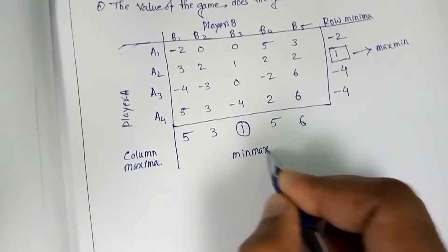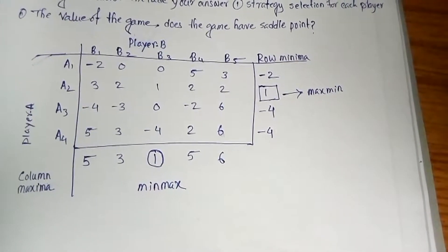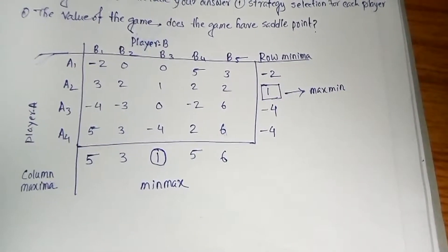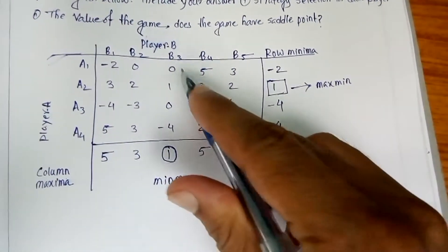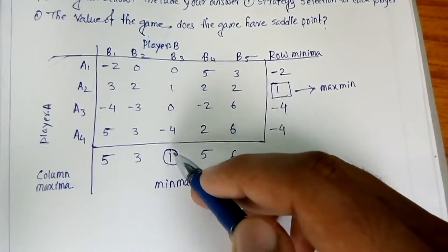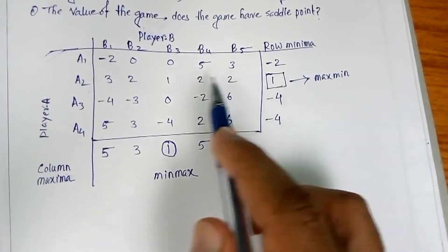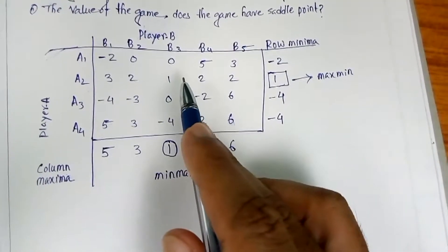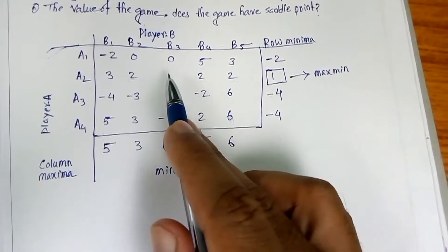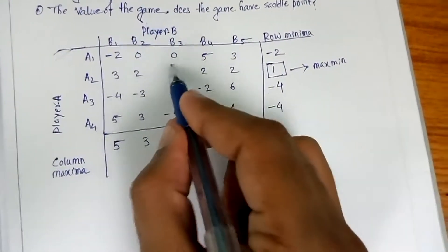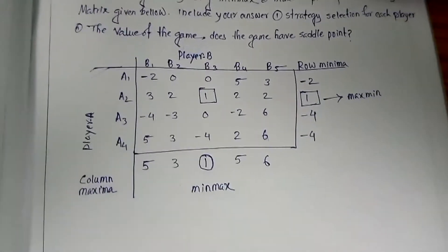Now find the intersection of the maximin and minimax. If I draw a line along the minimax column and a line along the maximin row, these two lines intersect at a single cell. The value at this intersection is where the saddle point is located.